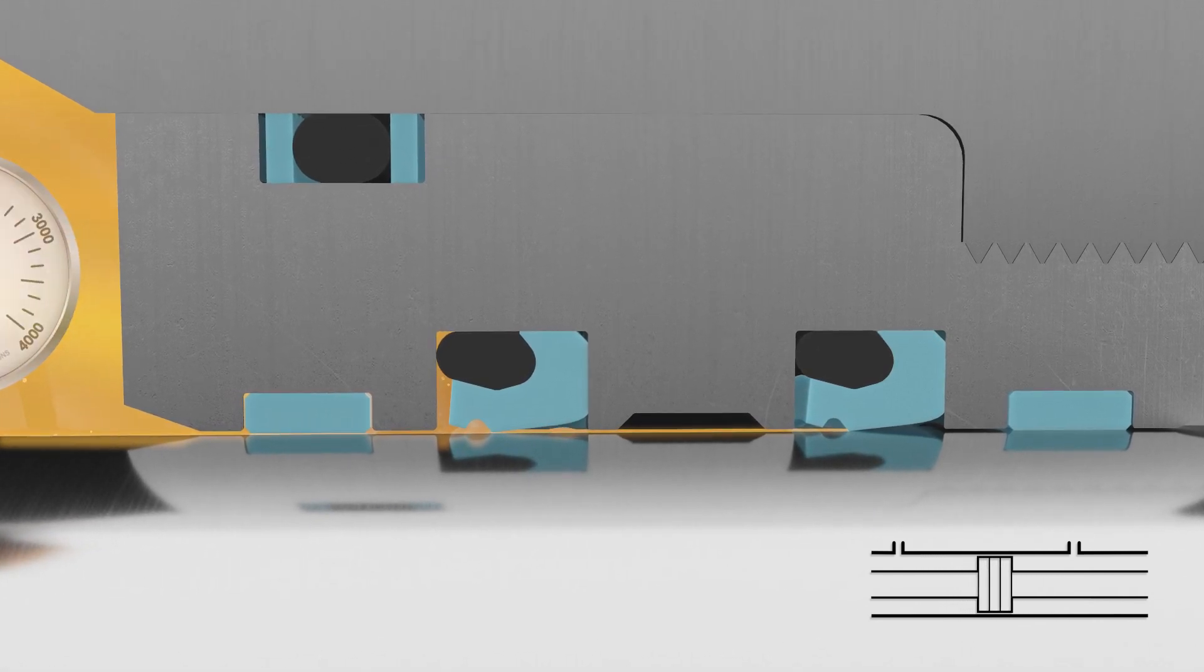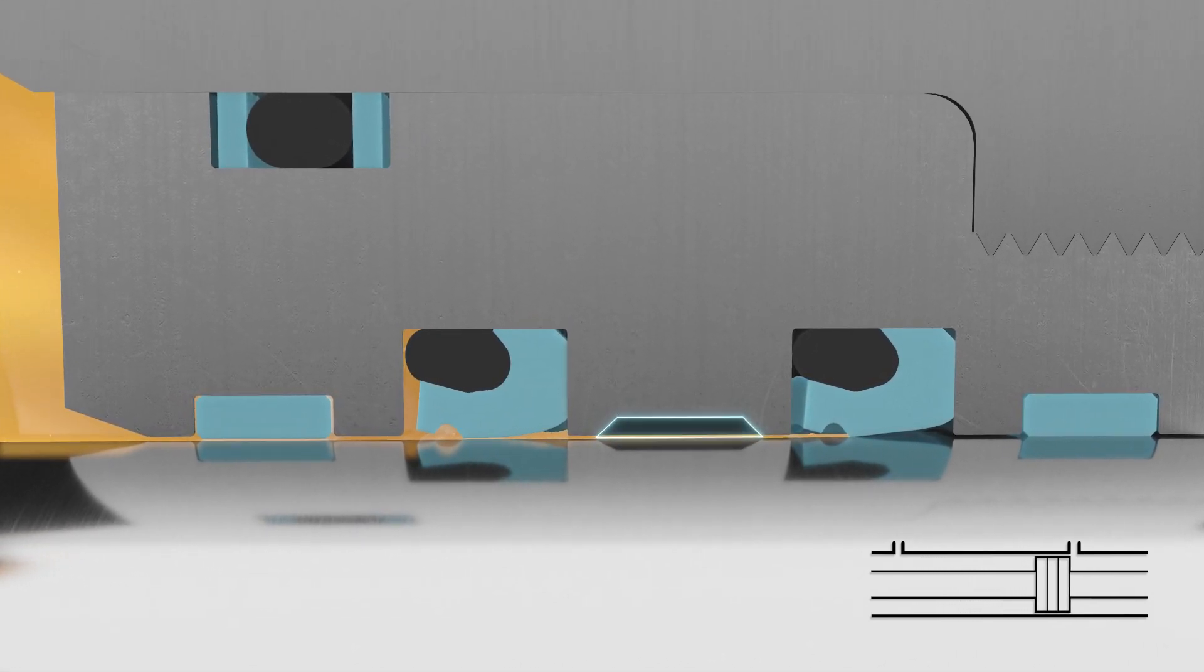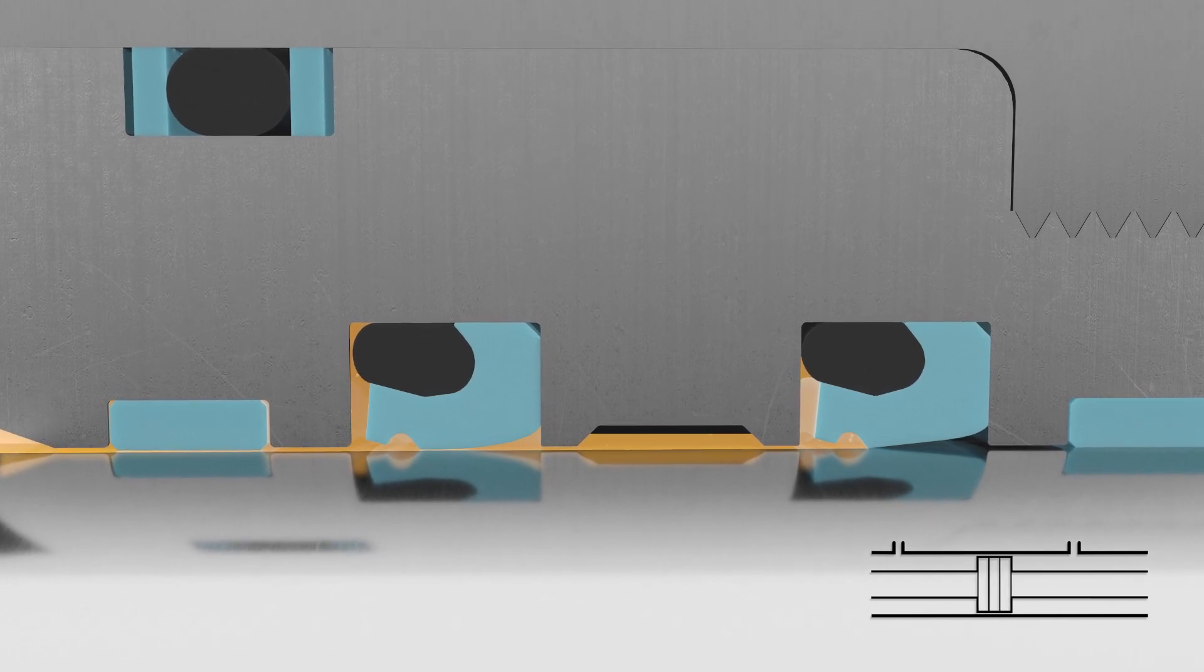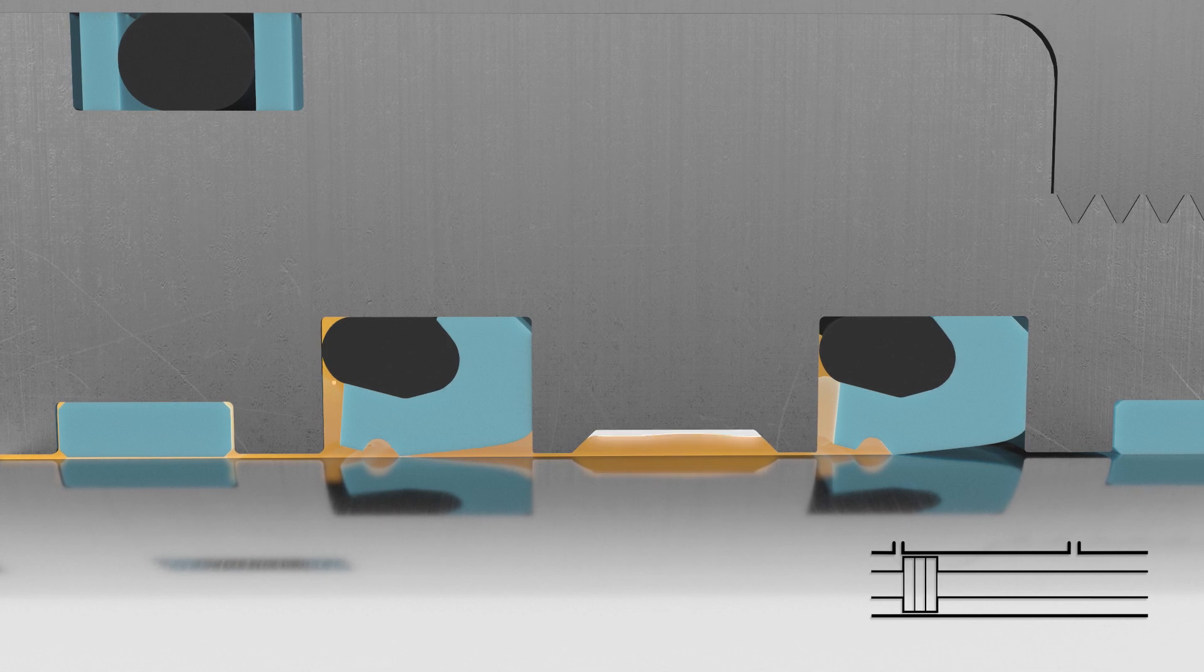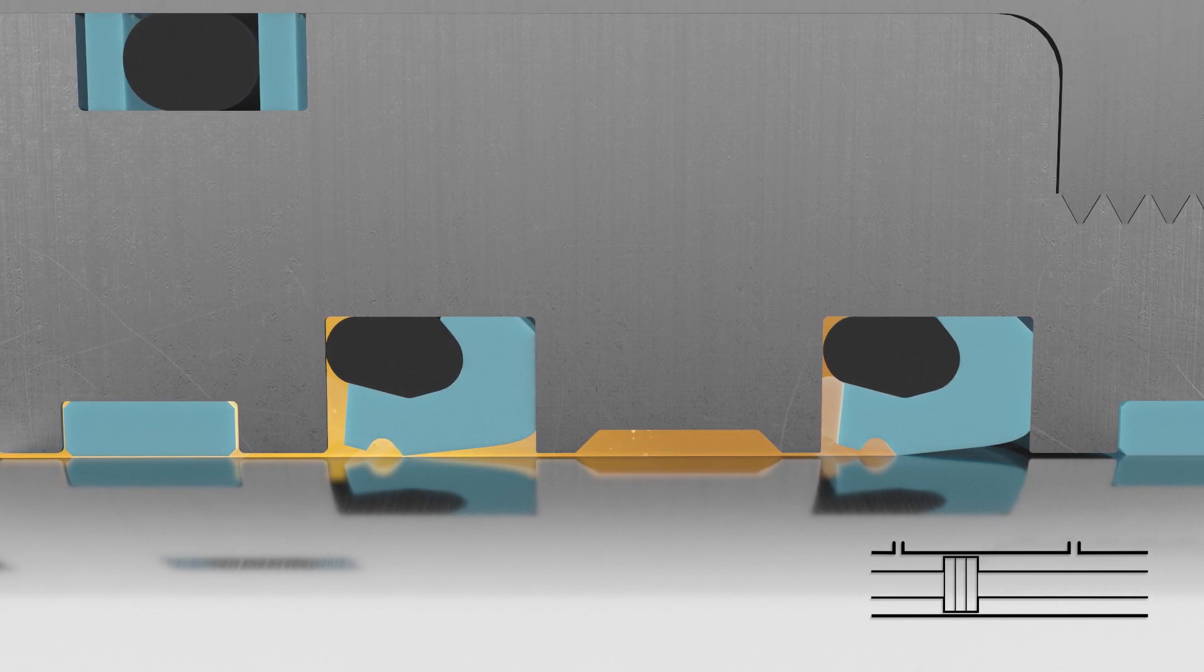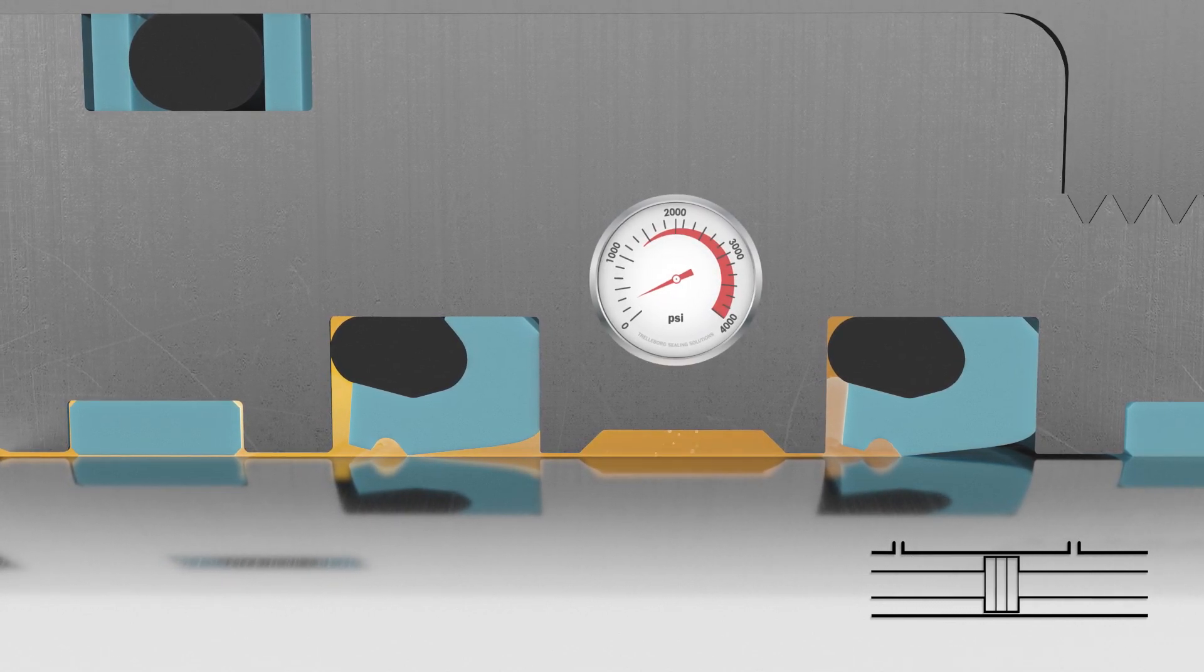Any additional oil is trapped in a reservoir between the seals. With the reservoir filled, pressure between the primary and secondary seals increases.